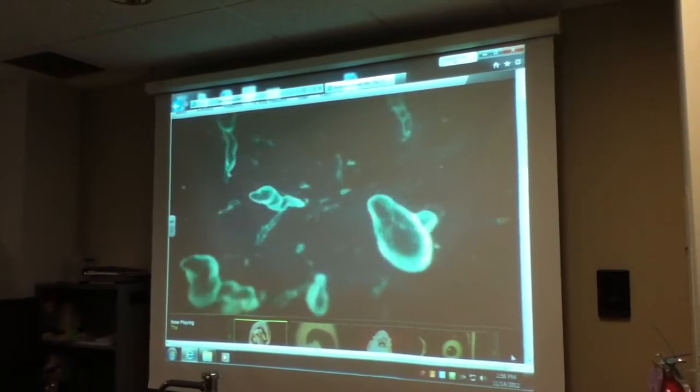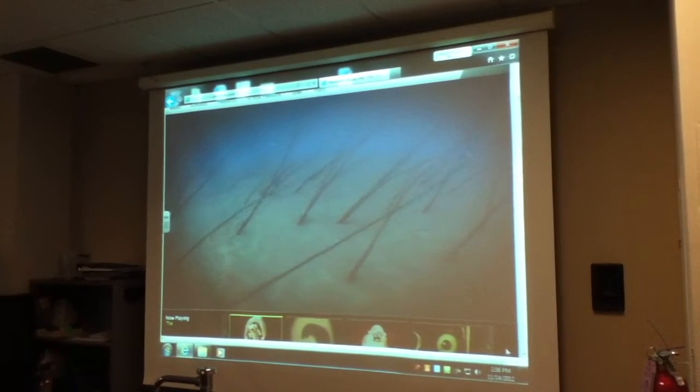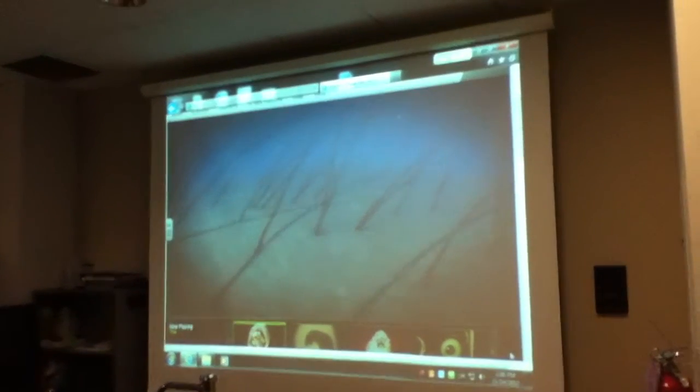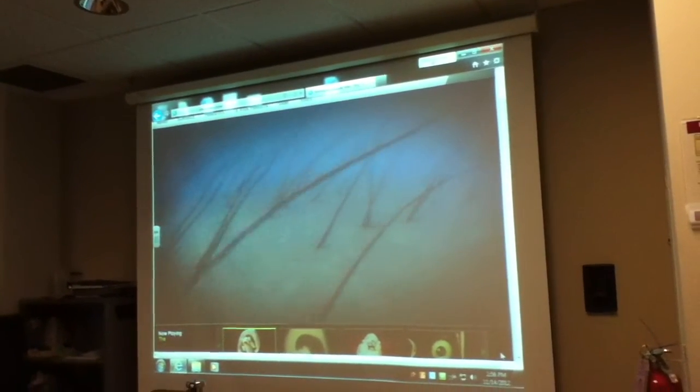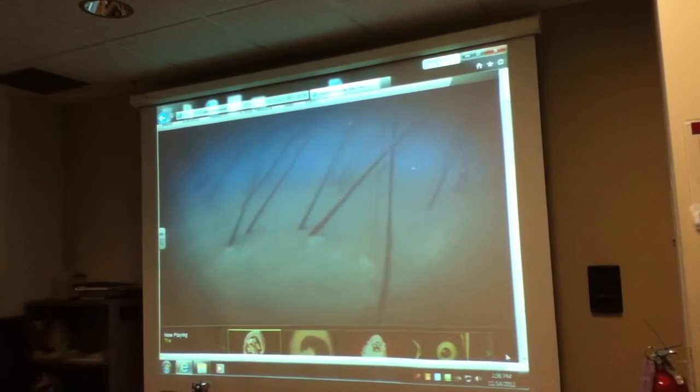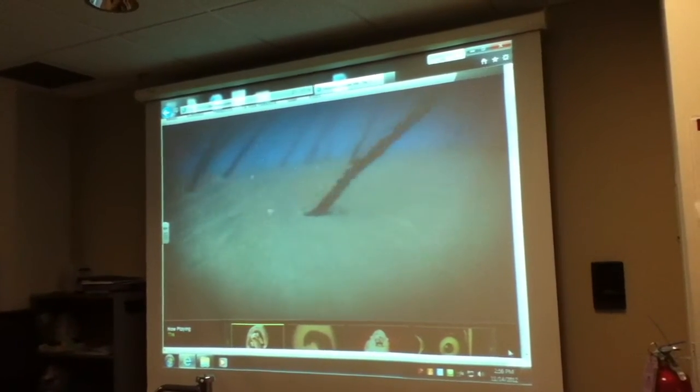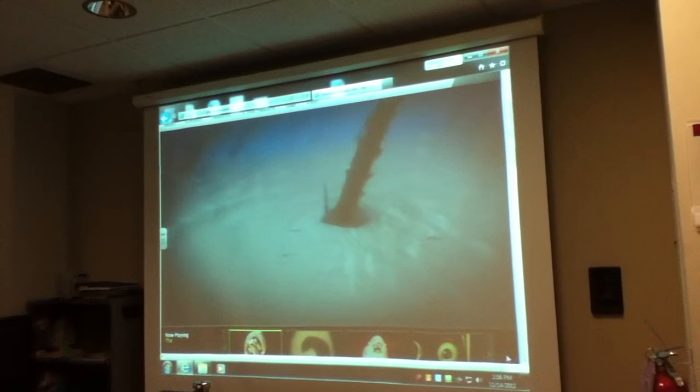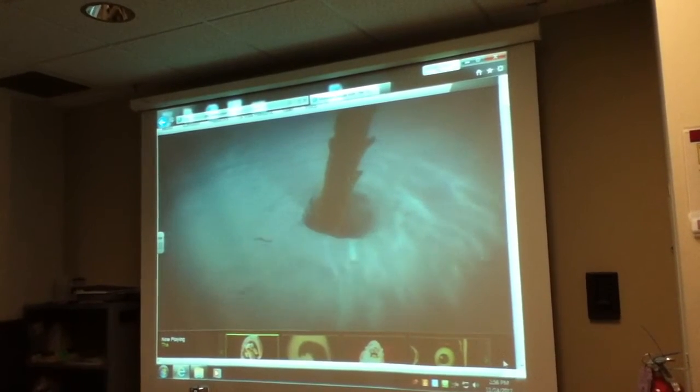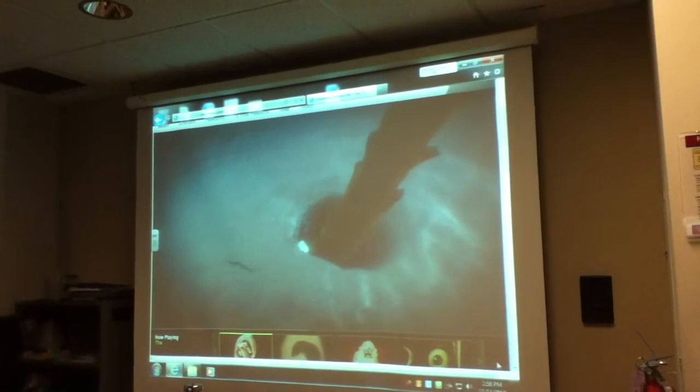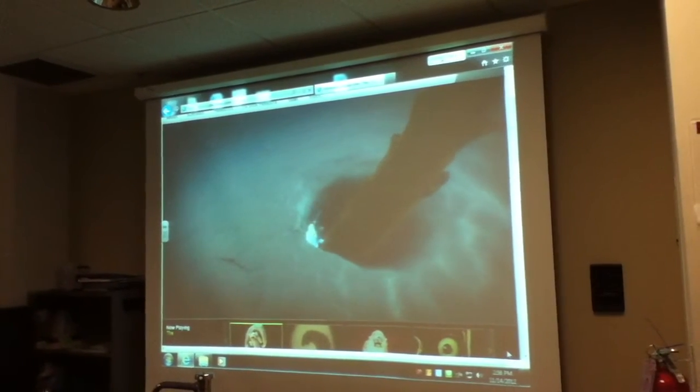The minute larvae penetrate our skin in three short stages. First, they attach to the skin. Then, the larvae search the skin for a penetration site, often at a hair follicle. After finding a penetration site, the larvae emit a chemical which dissolves human skin, producing a tiny hole they can swim through.